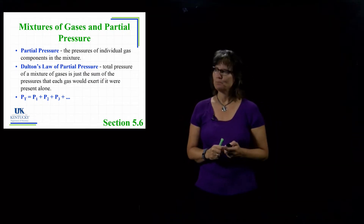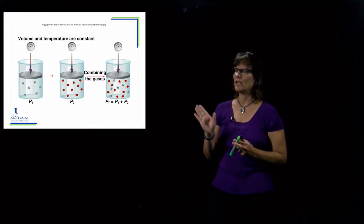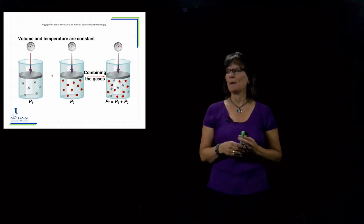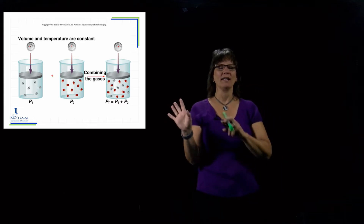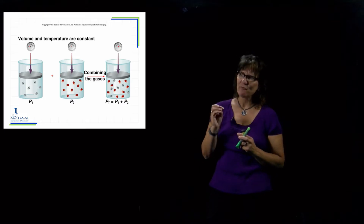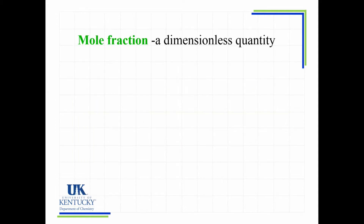Here it is represented in image form. On the left we see one gas in gray, considered by itself with no red molecules - it has a certain pressure measured on the gauge. Then P2 is a separate gas with its own measurement on the gauge. When we put those two gases together, the total pressure is simply the summation of those two. That's the visual image of what Dalton's Law of Partial Pressure states.